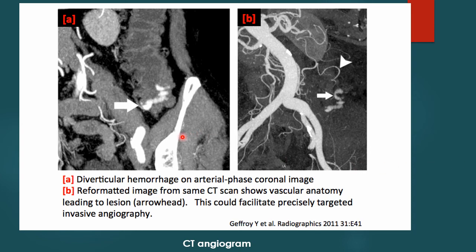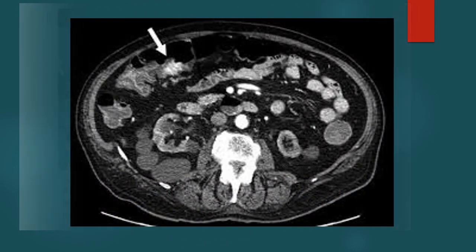This is a CT angiogram film of a patient with lower GI bleed, showing extravasation of contrast into the lumen of the descending colon — the arrow points to this finding. This indicates bleeding in that part of the colon. Another CT angiogram film also shows contrast leaking into the lumen of the descending colon, a sign of bleeding in that area.